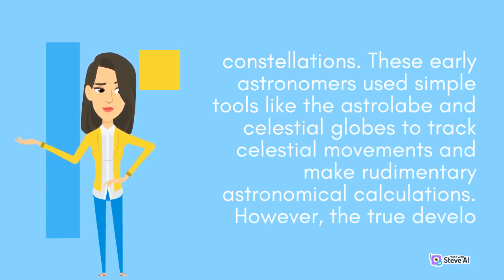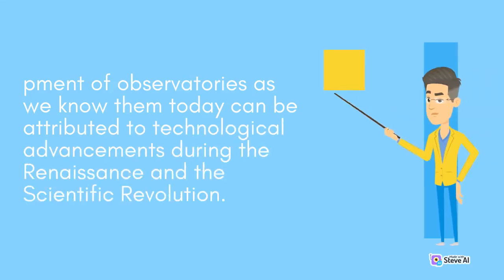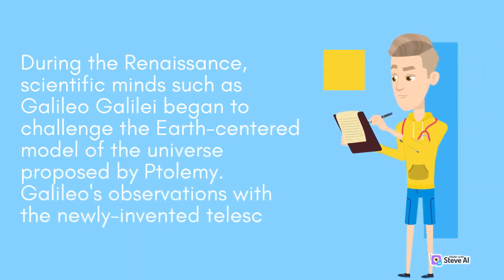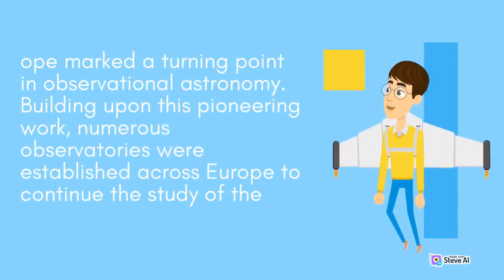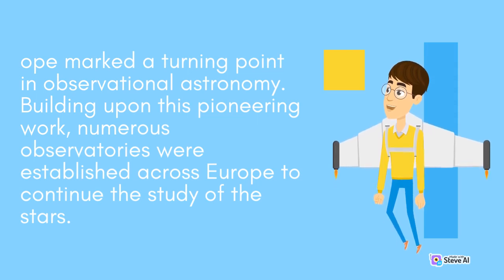However, the true development of observatories as we know them today can be attributed to technological advancements during the Renaissance and the Scientific Revolution. Scientific minds such as Galileo Galilei began to challenge the Earth-centered model of the universe proposed by Ptolemy. Galileo's observations with the newly invented telescope marked a turning point in observational astronomy, and numerous observatories were established across Europe to continue the study of the stars.